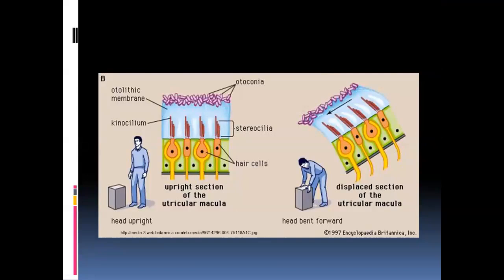The maculae have a different structure — on top of them are something like stones or crystals called otoliths. When you are standing upright, these otoliths are equally distributed. When a person bends in a particular direction, the head is no longer straight, and due to gravity these stones pull to one side. This causes the macular receptor to bend, and the hair cells pick up this movement and send it to the cerebellum. The brain then understands that the person's head is leaning in a particular direction.